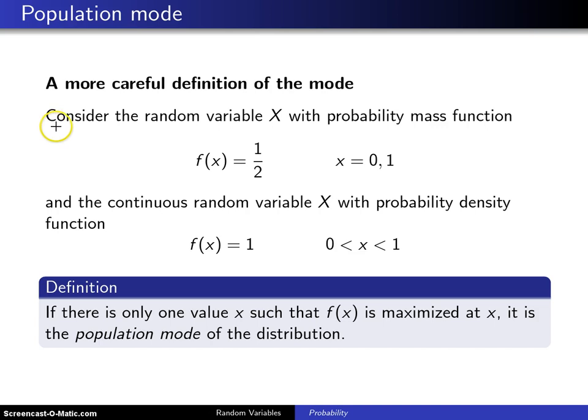We'll do that by two examples. Consider a random variable x, and this is a discrete random variable, with probability mass function f of x equals one half for x equals zero and one. So this is a two point discrete distribution. There are just two values in the support, and each one of them has a probability mass value of one half.